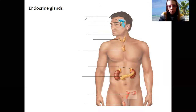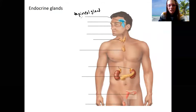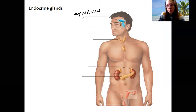The first one back here — do you guys recognize that? That's the pineal gland. It's an endocrine gland that produces melatonin. Melatonin is involved in circadian rhythms and helps you feel sleepy. That's the job of the pineal gland.